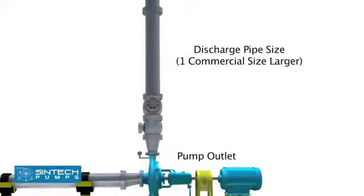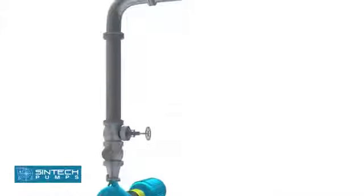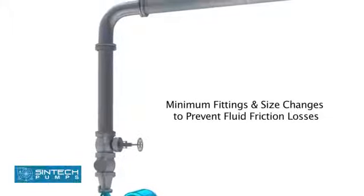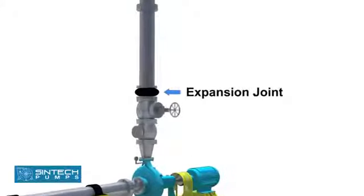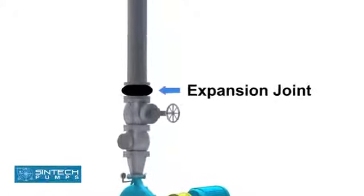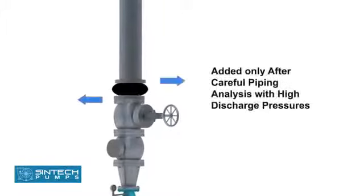Discharge pipe size should be at least one commercial size larger than the opening of the pump outlet. The number of fittings and size changes should be minimum to prevent fluid friction losses. Expansion joints may be used only after careful piping analysis, especially when discharge pressures are on the higher side.